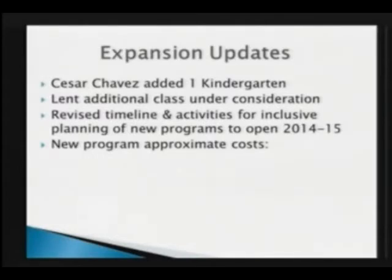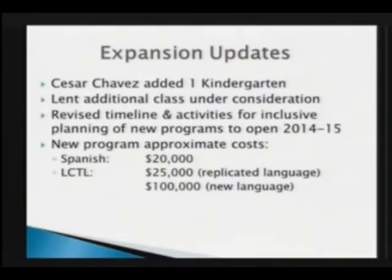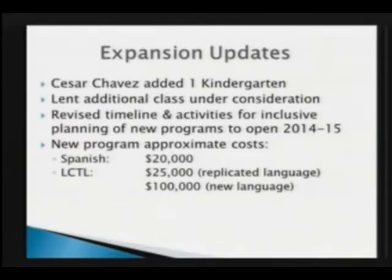In the past, we have not really included principals at that level of planning. Looking at our program startups, Spanish has materials set up, so we're estimating approximately $20,000 — and that is a very conservative figure based on how we've done it in the past. For less commonly taught languages, the cost difference has to do with whether it's a program we're replicating or one we're starting new. Starting new takes a lot more curriculum assessment and development. To replicate one is somewhere between $25,000 and $30,000, and to start a new program we're looking at probably about $100,000.